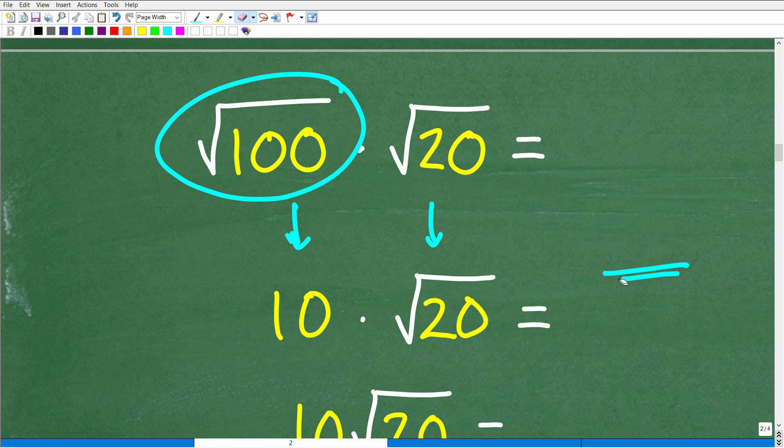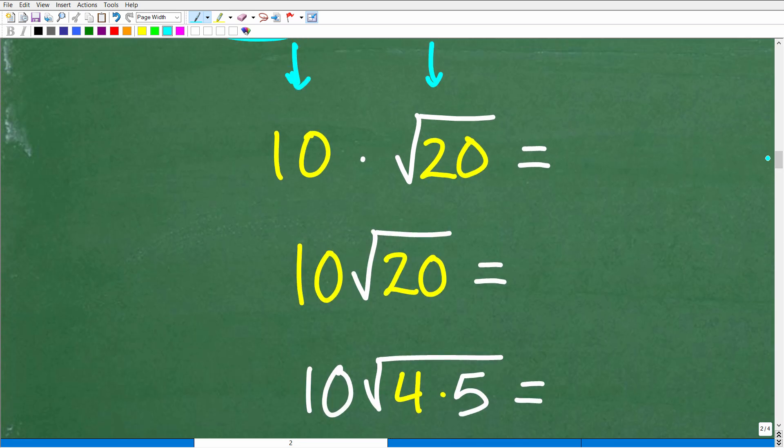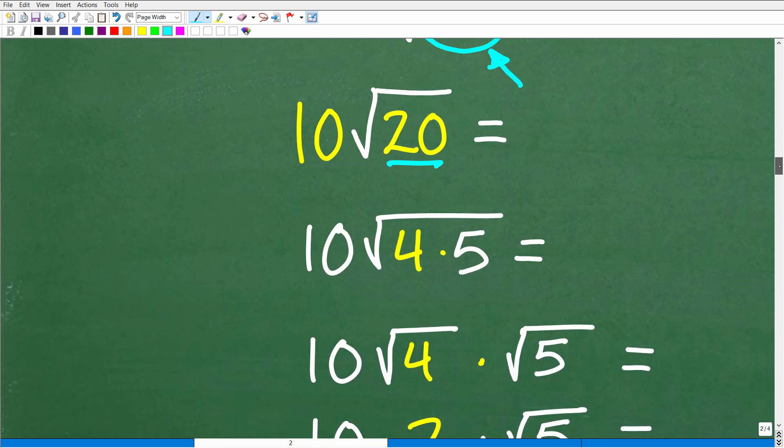Because what can happen, and this is pretty common, is maybe you didn't choose the biggest perfect square factor when you kind of started simplifying this problem. No big deal. So what you want to do is take a look at this number, whatever it might be underneath your square root, and ask yourself, is there any more perfect square factors in this number right here? So with 20, you might be saying to yourself, wait, wait a minute, 20 is the same thing as 4 times 5, and 4 is a perfect square factor.